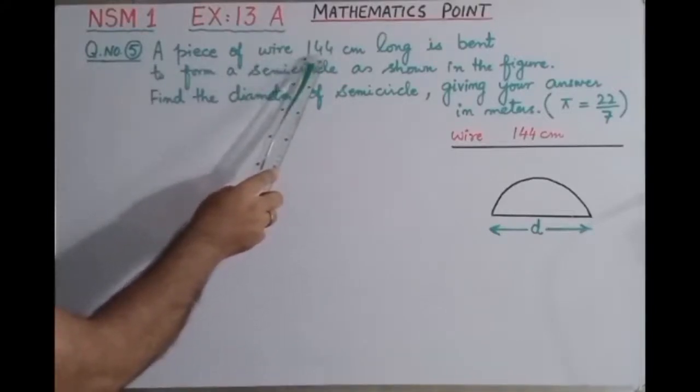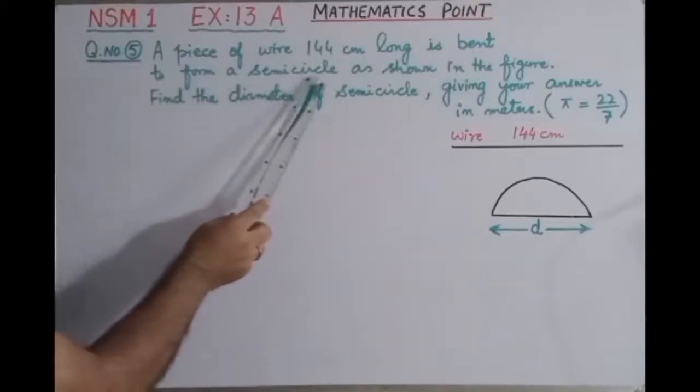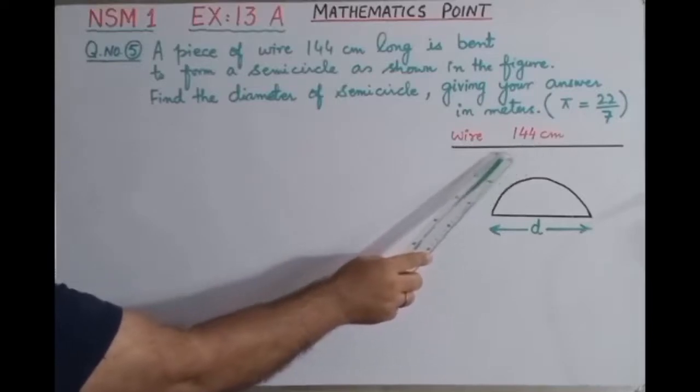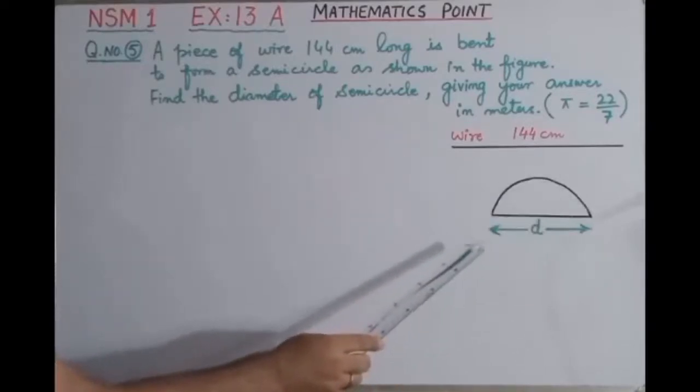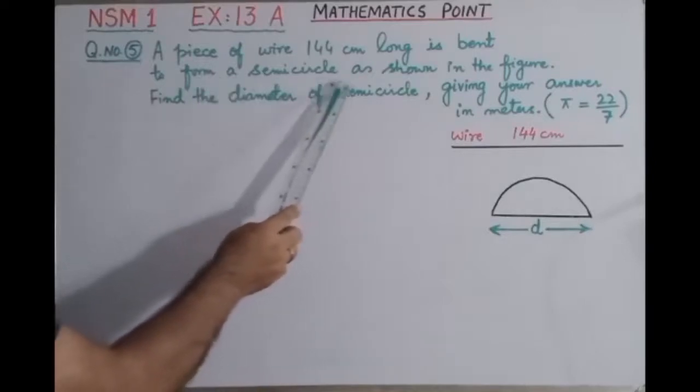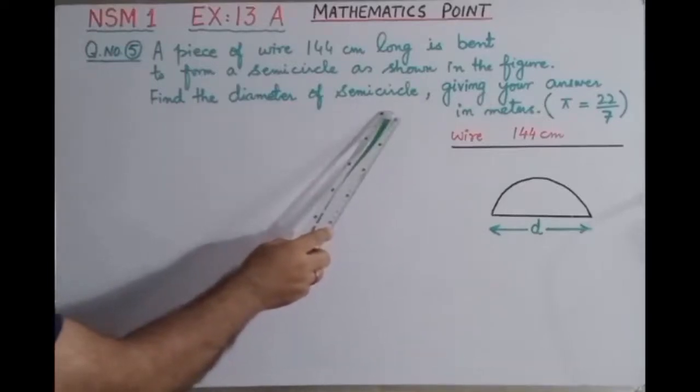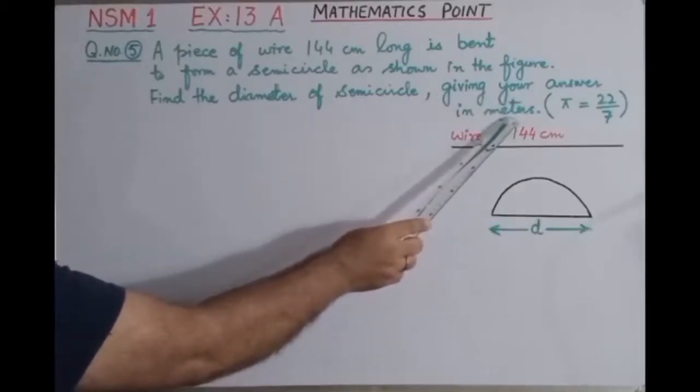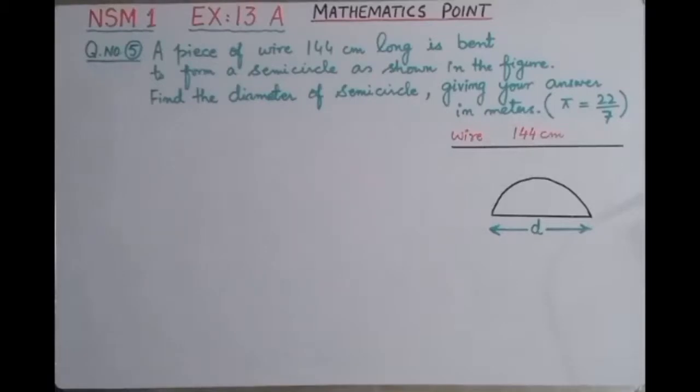...144 centimeter long is bent to form a semicircle. You can see here this is the wire of length 144 centimeter, and this wire is bent to form a semicircle as shown in the figure. So find the diameter of semicircle, giving your answer in meters, and we have to take the value of pi equal to 22 by 7.